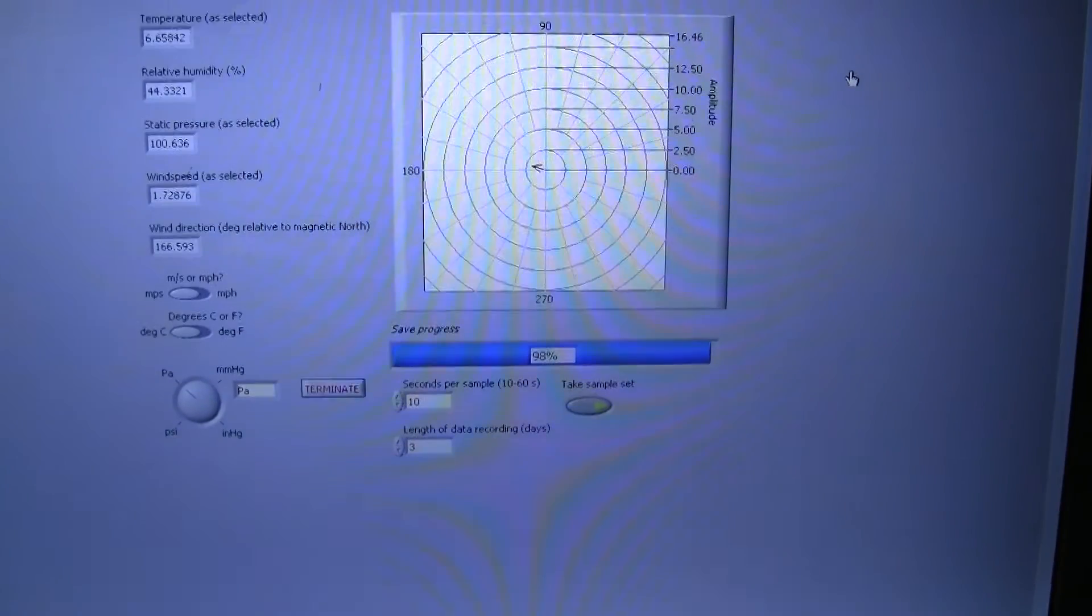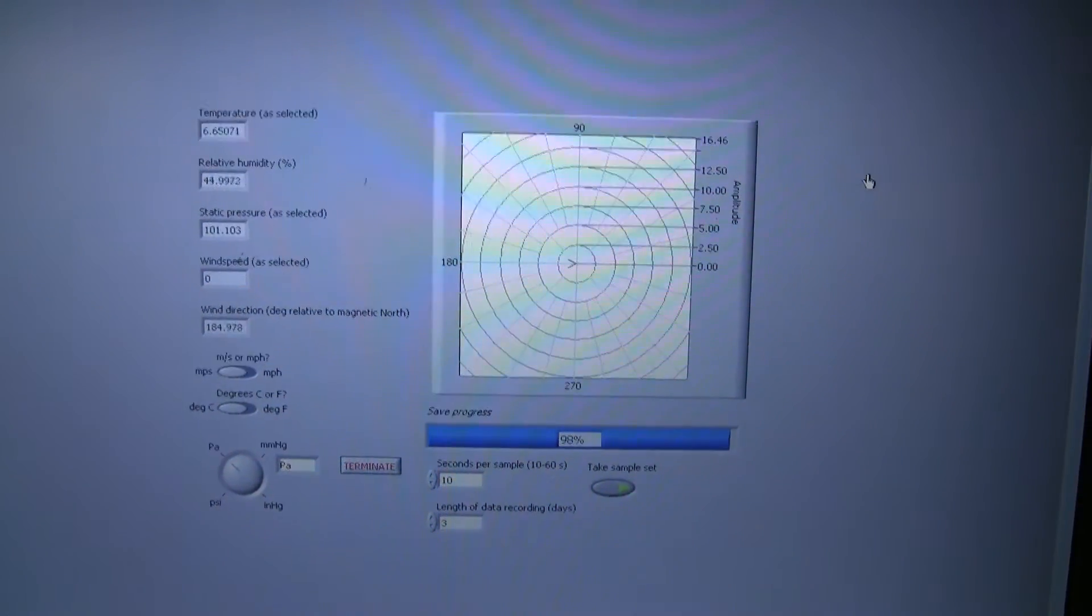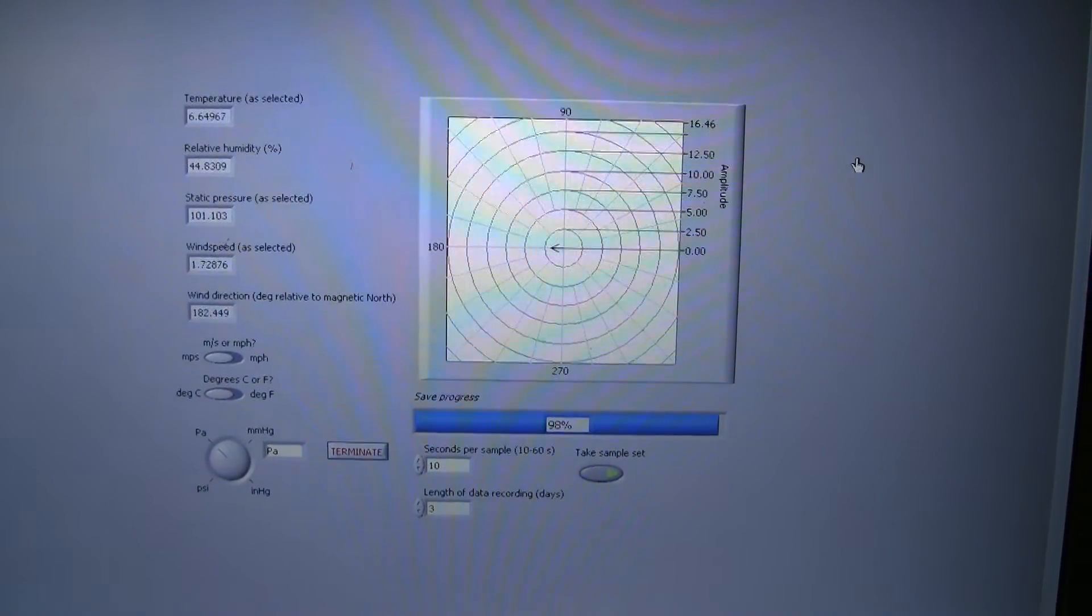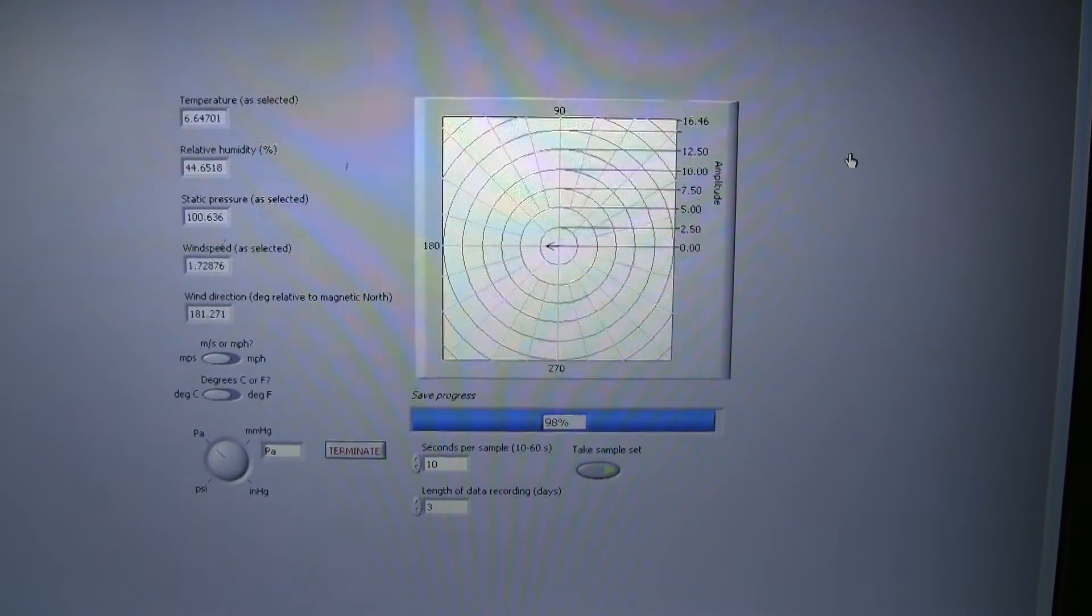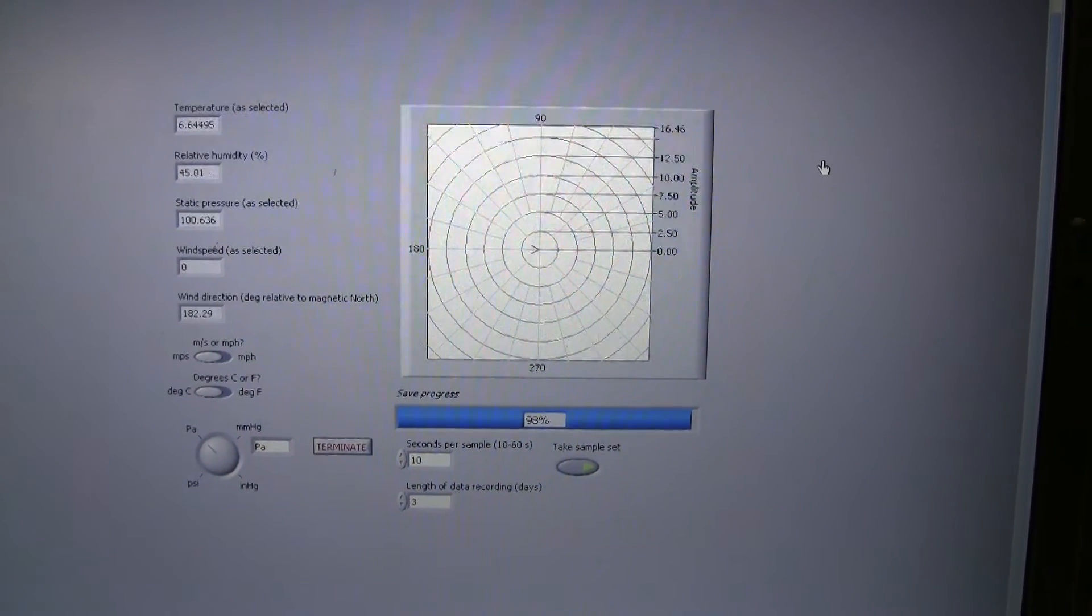As you can see, the progress is at 98%, so we have a couple more hours to go. We have displays of temperature, relative humidity, static pressure, wind speed, wind direction, and this has been recording for almost three days.